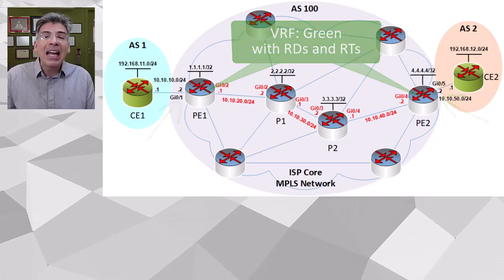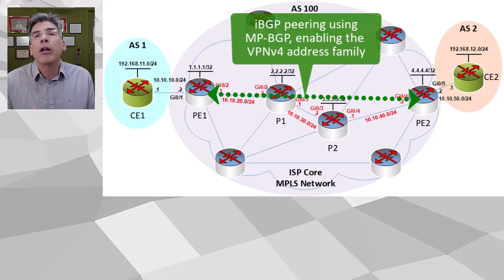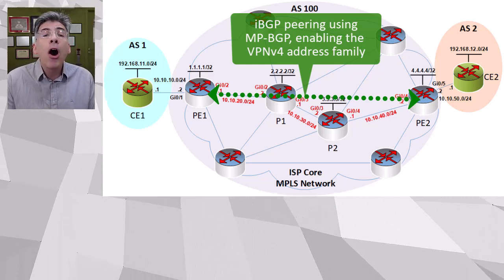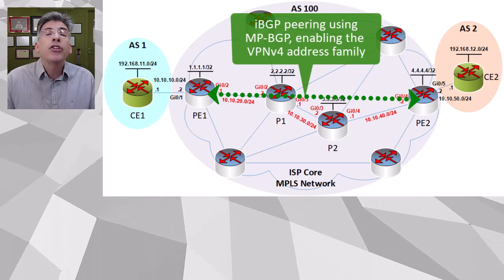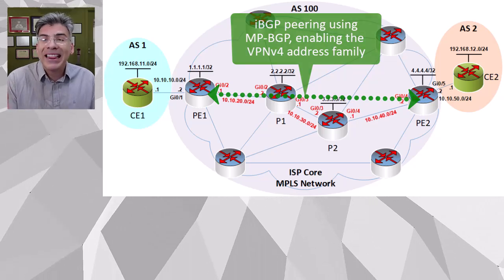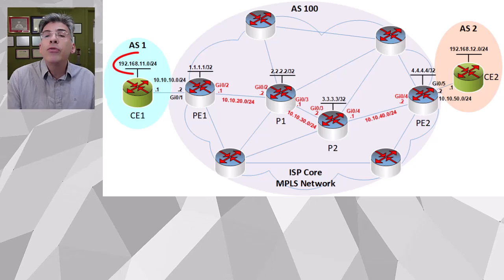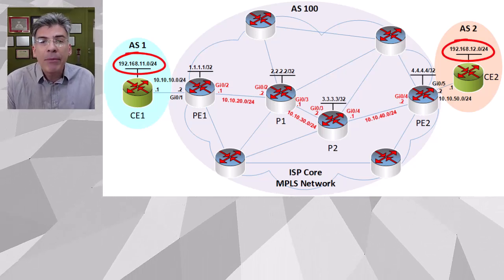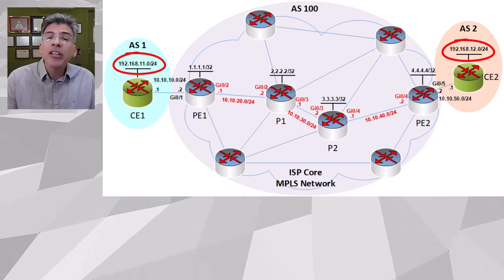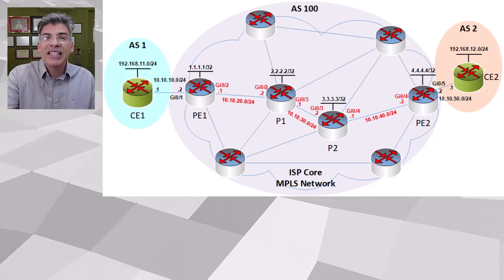And finally, we created the IBGP peering between PE1 and PE2 using multi-protocol BGP, and we enabled the VPNv4 address family on those BGP peerings so that VPNv4 routes can be exchanged. So that's where we are at this point. Now let's go on and finish our configuration so that these two customer networks will be able to communicate with each other while being isolated from other customer networks that may be served by this infrastructure.